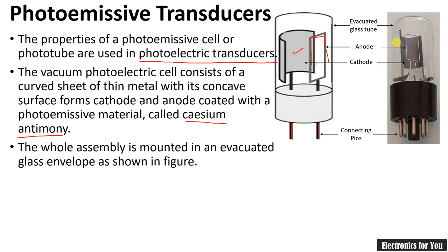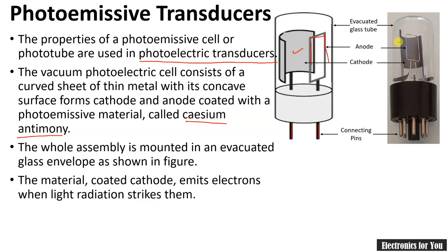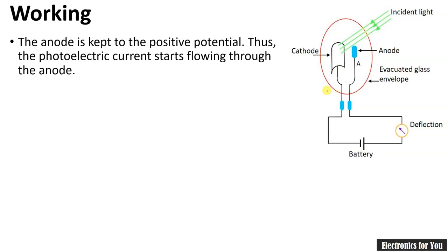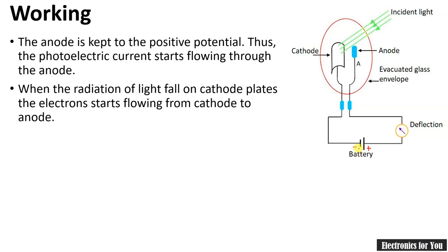Here is the photograph and the symbol for the photoemissive transducer. Now let us see the working. In this assembly, the anode is connected to the positive terminal of the battery and the cathode is connected to the negative terminal of the battery, meaning they are connected in forward bias mode, and a deflection meter is connected here.